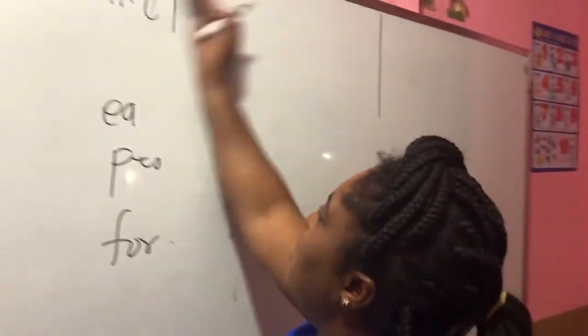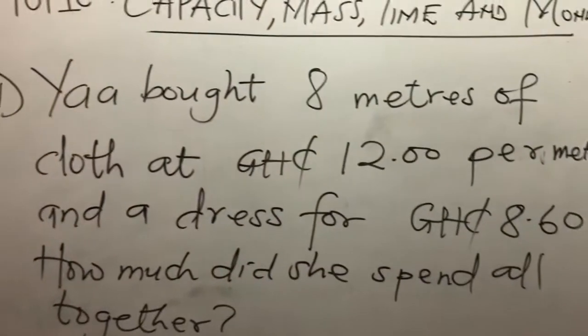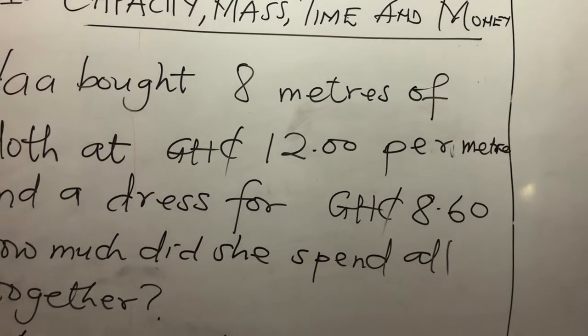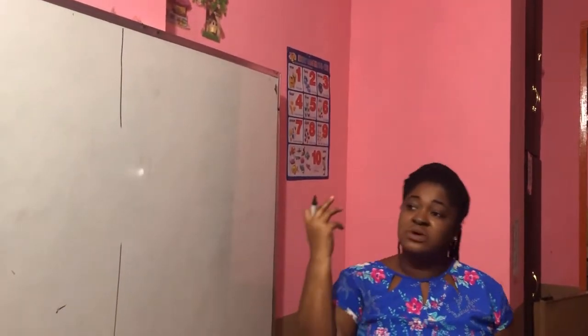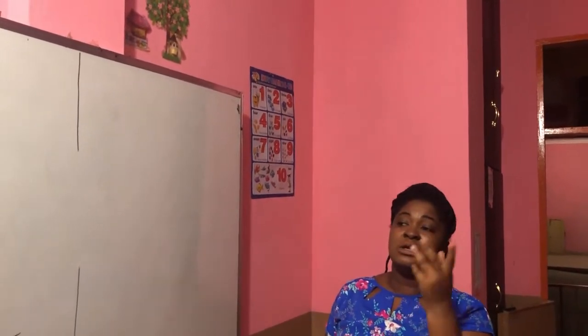So now let's pay attention to the question. Yaa bought eight meters of cloth at 12 Ghana cedis per meter. That means every meter is 12 cedis, so one meter is 12 cedis. She bought eight meters of cloth. So if one meter is 12 cedis, you have to find the total for the eight meters of cloth. Let's find that now.